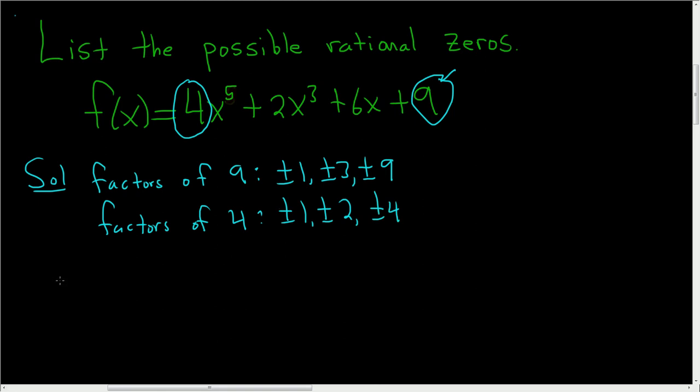To finish, to find the possible rational zeros, you just divide. So let's do it carefully. So first we look at 1 over 1. Well 1 over 1 is just 1, so plus or minus 1.